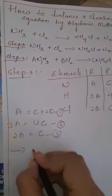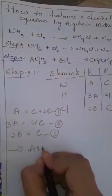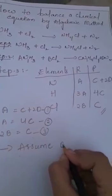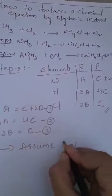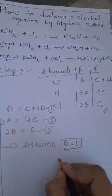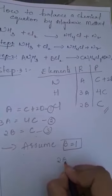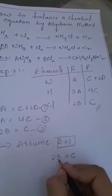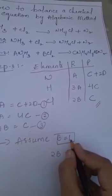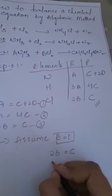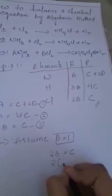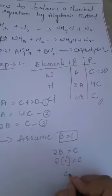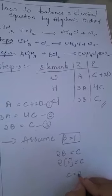Now, let us assume from the 3rd equation that B is equal to 1. So in 2B equals C, substituting B as 1: 2 into 1 equals C, therefore C value is 2.